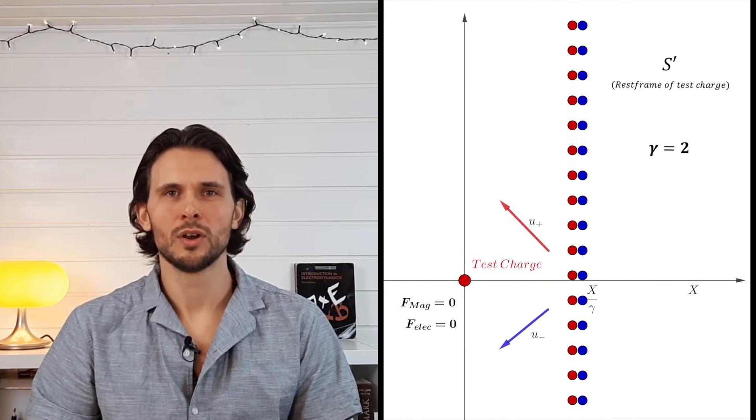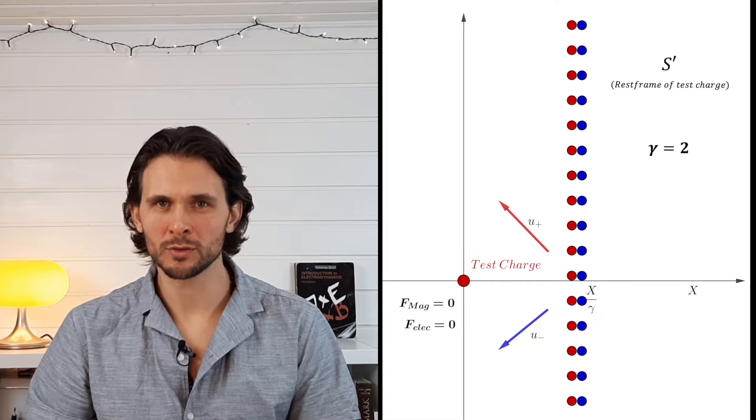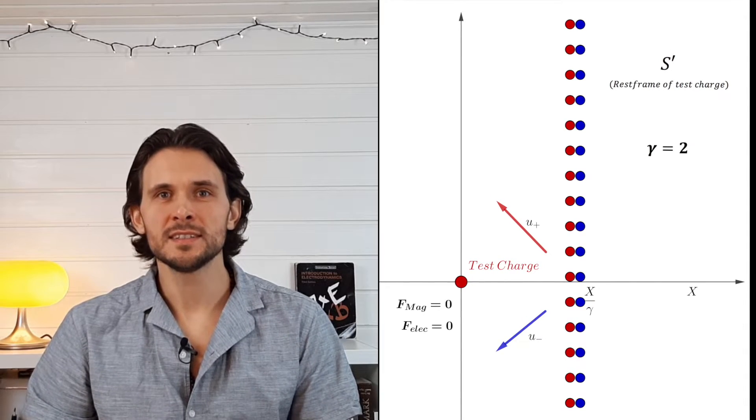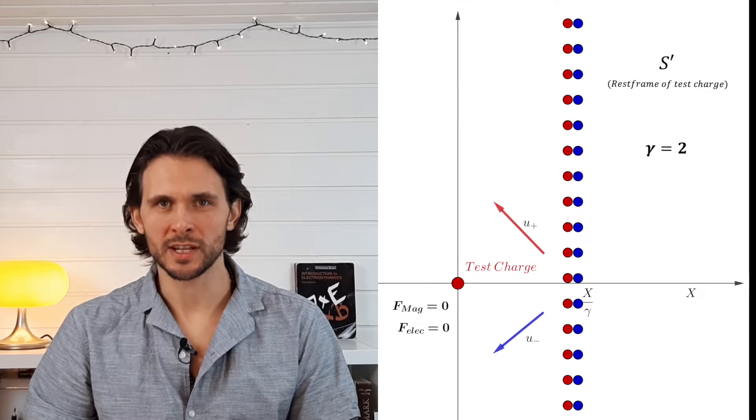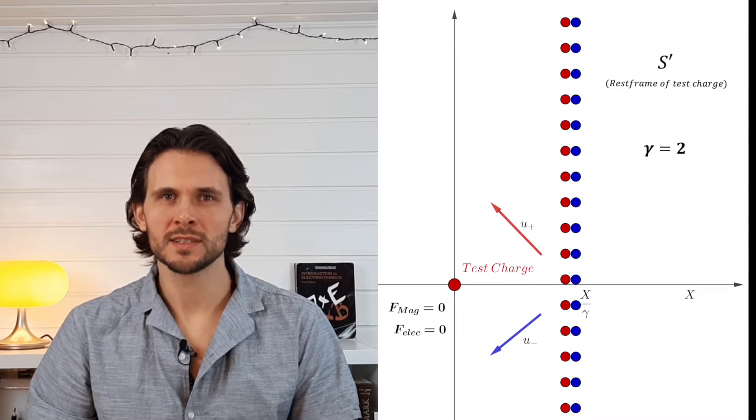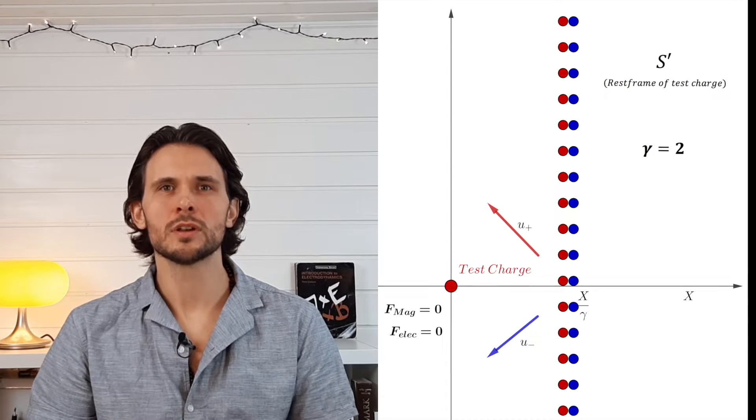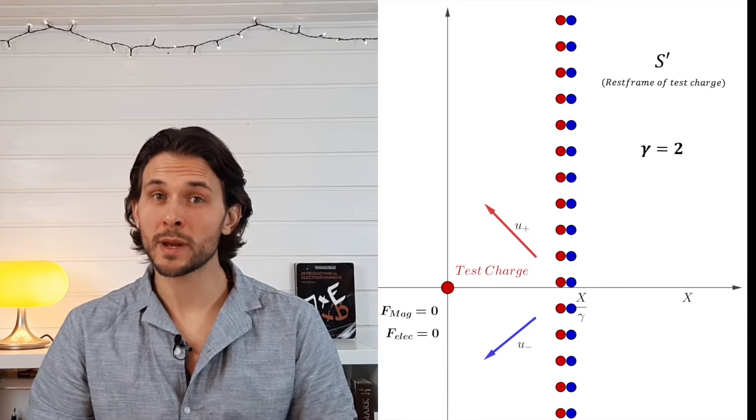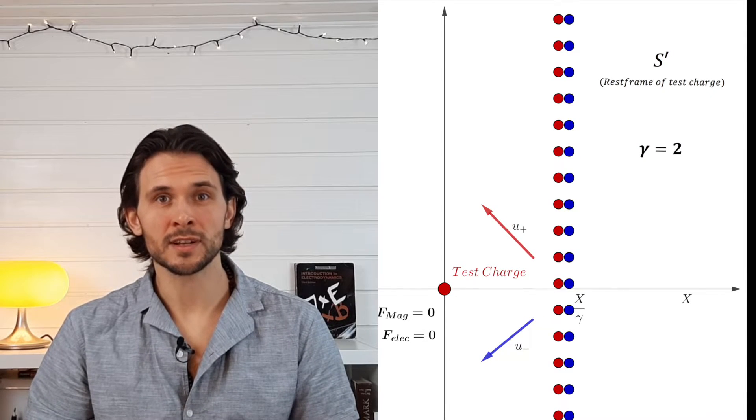Let's now jump to the rest frame of the test charge. We will view the situation at the coordinate time of the test charge to compare forces between the two frames. What we see here is the wire is now closer due to length contraction, but the distance between charges in the wire is unchanged. This happens because the transformation is independent of the y coordinate. No length contraction occurs in the wire and it remains electrically neutral. Using Feynman's electrostatic approach, we'd conclude no forces act on the test charge, and this is of course incorrect.